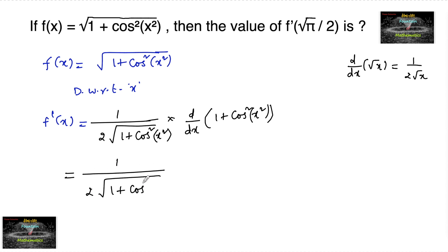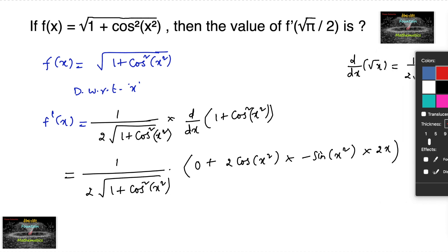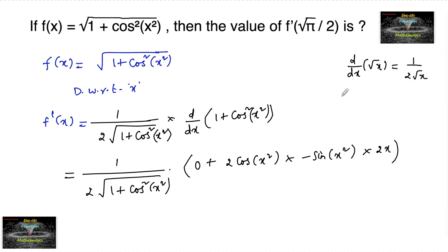This equals 1 over 2√(1 + cos²(x²)), into the differentiation of (1 + cos²(x²)). The derivative of 1 is 0, plus for cos² we get 2cos(x²) into again the differentiation of cos, that is −sin(x²), into again differentiating x², which is a composition of functions, giving 2x.